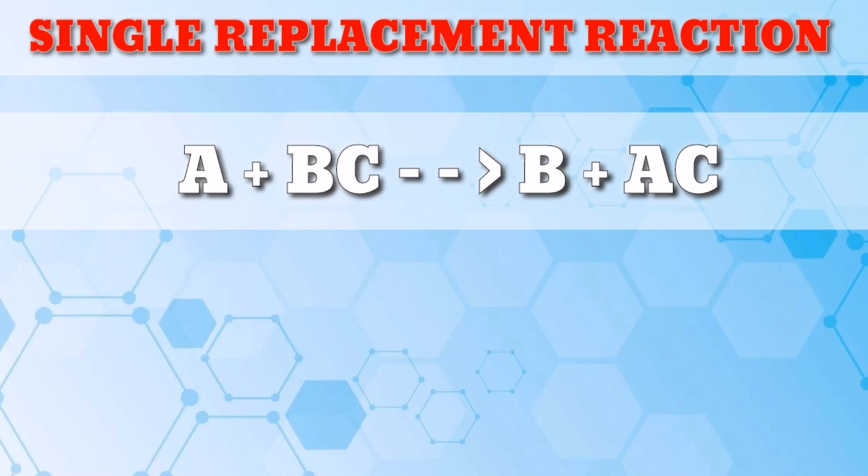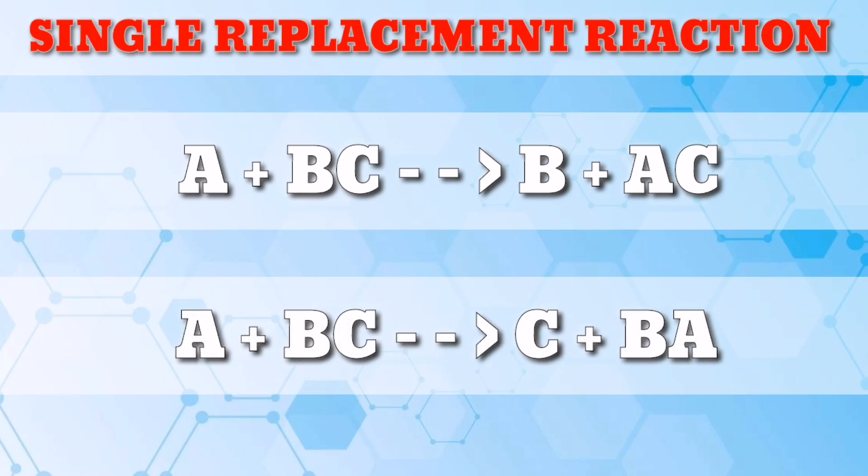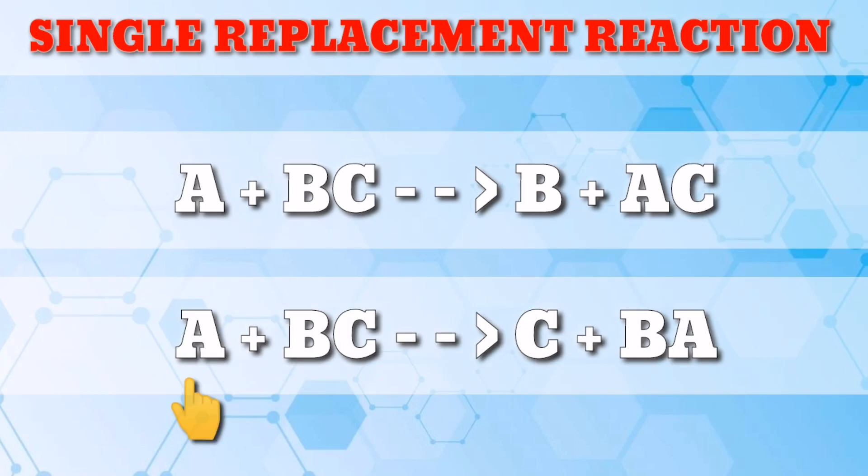When the element that is doing the replacing is a non-metal, it must replace another non-metal in a compound, and the general equation becomes A plus BC equals C plus BA. A is a non-metal and replaces the non-metal C in the compound BC.